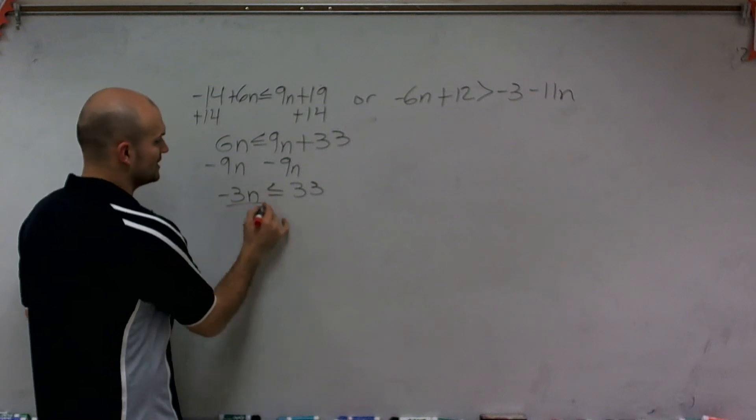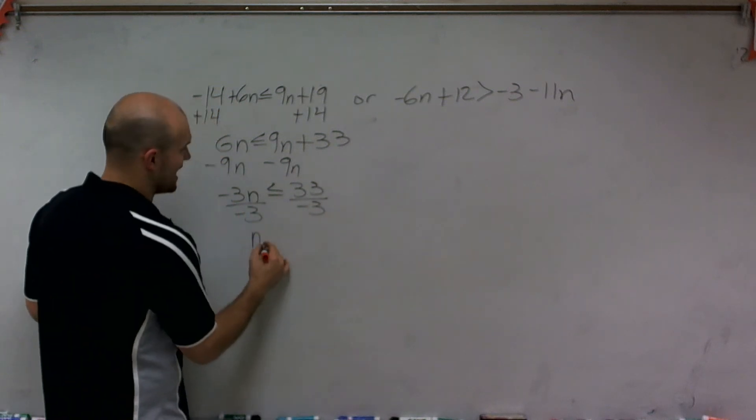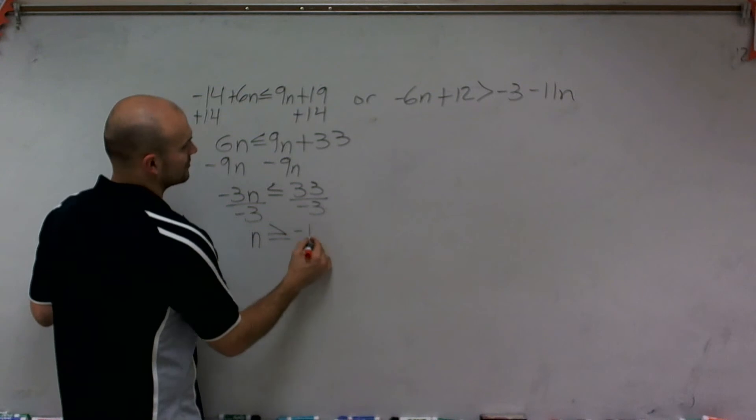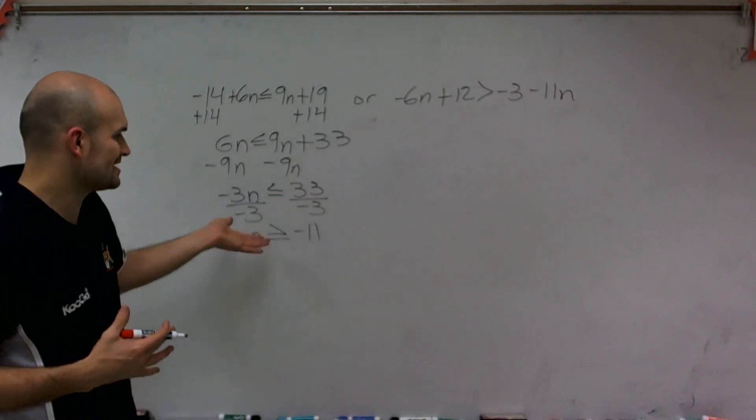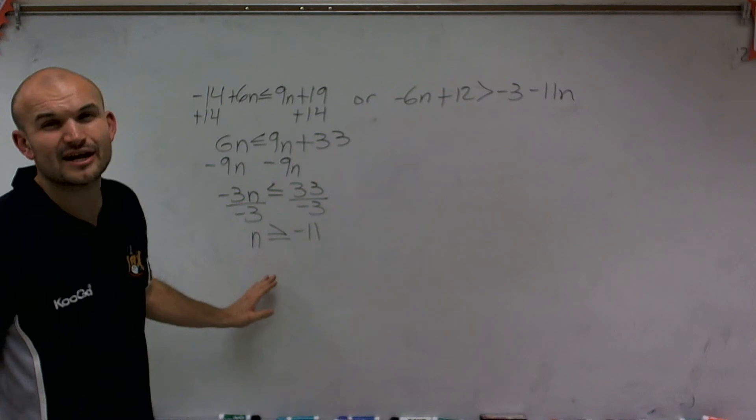Now, solving for n, I divide by negative 3, and I get n is now greater than or equal to a negative 11. So you just got to remember whenever you divide or multiply by a negative number, you got to flip the sign.